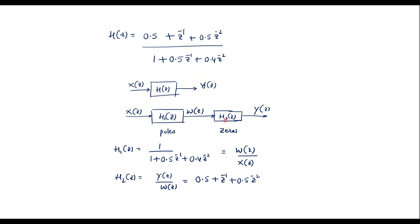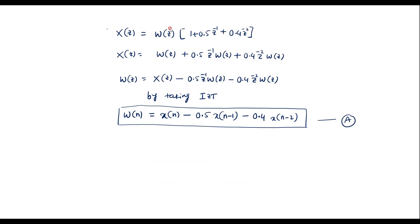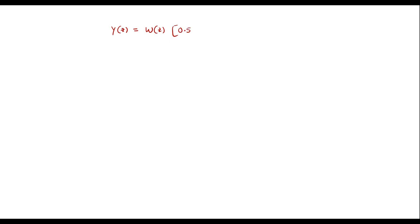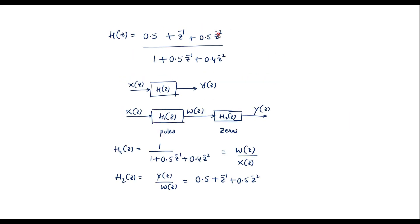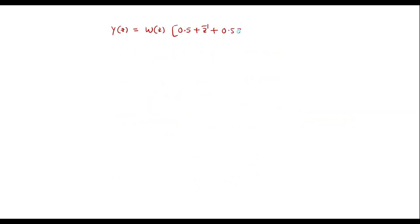Now for the second subsystem H2(Z): Y(Z) equals W(Z) times (0.5 plus Z inverse plus 0.5 Z power minus 2). Expanding: Y(Z) equals 0.5 W(Z) plus Z inverse W(Z) plus 0.5 Z power minus 2 times W(Z).